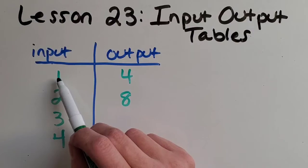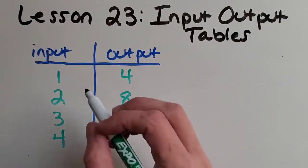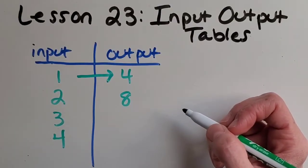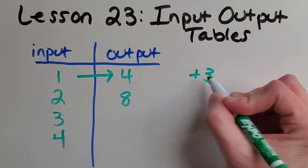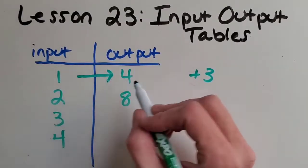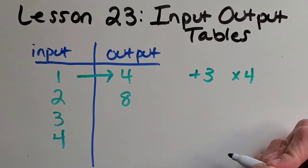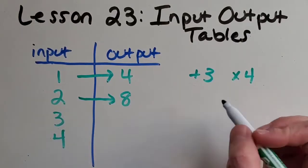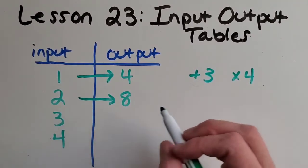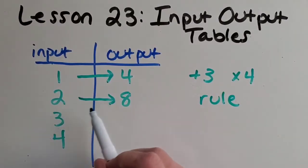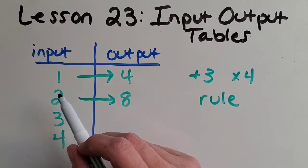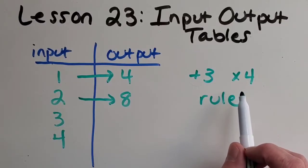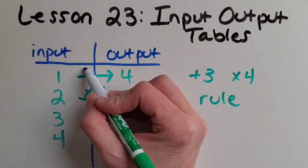I always start with the first line. If you think about the one, is there something you could do to the one to get it up to four? Is there a certain operation? Well, you might have said either plus three or maybe times four. Now here's the thing I like to do. I like to check the second line next, because that will really tell me which one of those works the best. This pattern or rule is going to work on every line in the input-output table. So, how do you get from two to eight? Is it plus three? Is it times four? Good. It's times four. So that must be my pattern or rule, is times four.